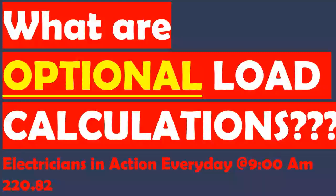The only time you're going to use the optional method in testing is if they say the words 'optional method.' Any other load calculation that does not specify is going to be the standard method. You will only use the optional method when it states the words 'optional method,' whether it's telling you to calculate appliances, calculate square foot, or whatever it is. You have to be very careful there.